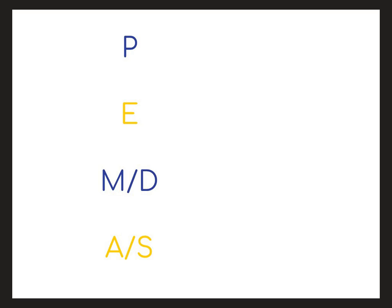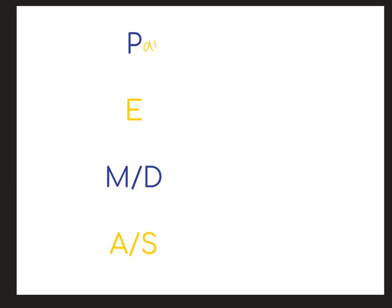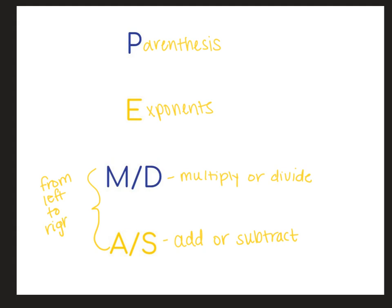Just in case you forget order of operations, we typically use this little acronym PEMDAS, which means parentheses, exponents, multiply or divide, and add or subtract. These last two, we do from left to right. So whichever operation appears first is what you do first. So just because M comes first in PEMDAS doesn't mean we always multiply first. We just go from left to right.